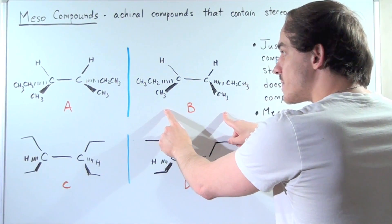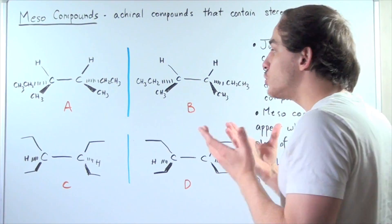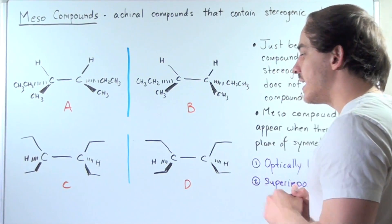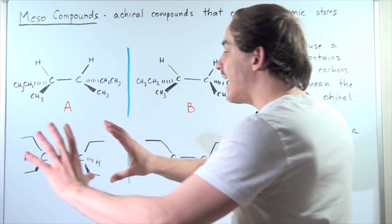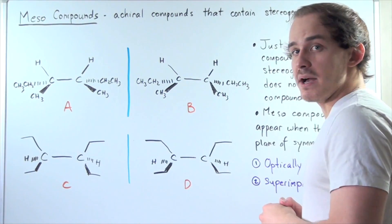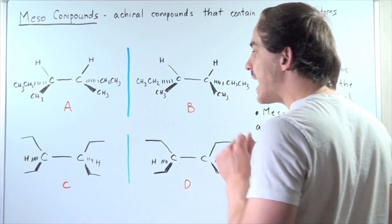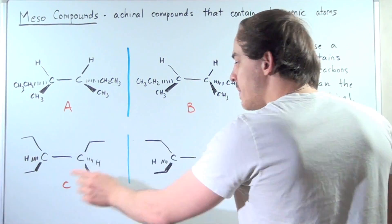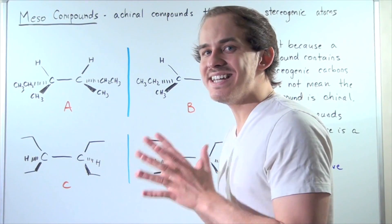If I take this and I place it exactly on top of A, I produce back my compound A. And likewise, if I take compound B and place it exactly on top of my compound C, I produce back my compound C. So that means these two pairs of molecules, pairs of compounds, are not enantomers.